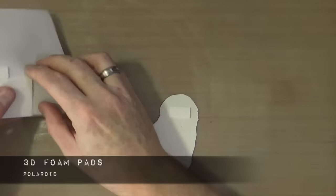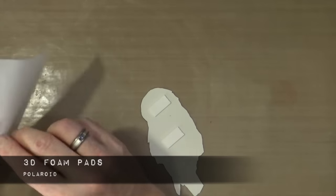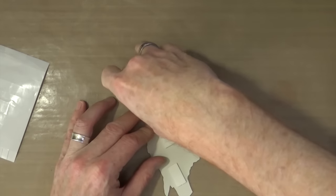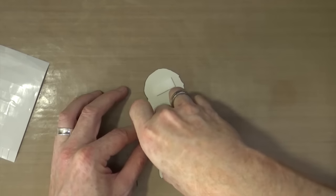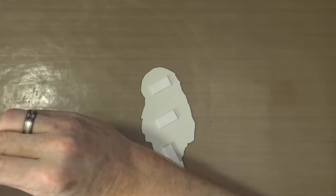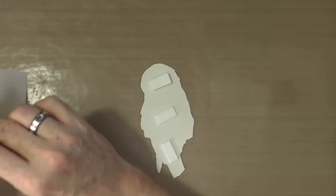Because I also want my owl to look a little bit dimensional, I'm adding some foam pads to the back of the owl as well. But rather than just have the one set, I'm going to put a double layer of foam pads just to make sure that it stands off the actual canvas a little bit further.